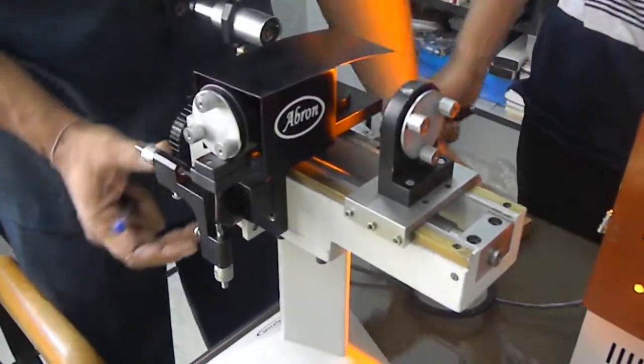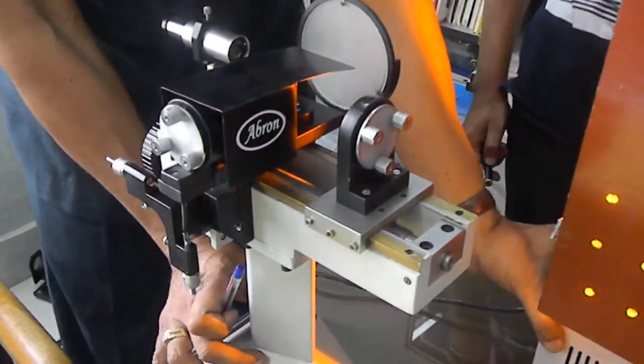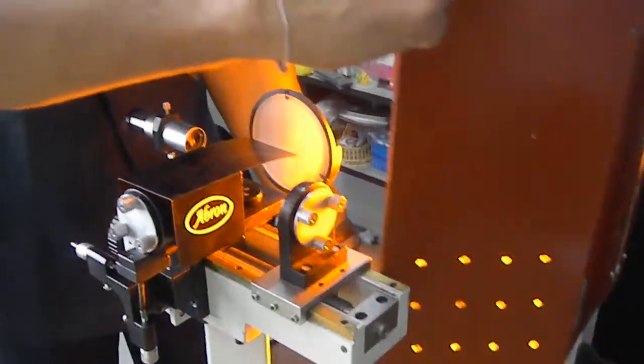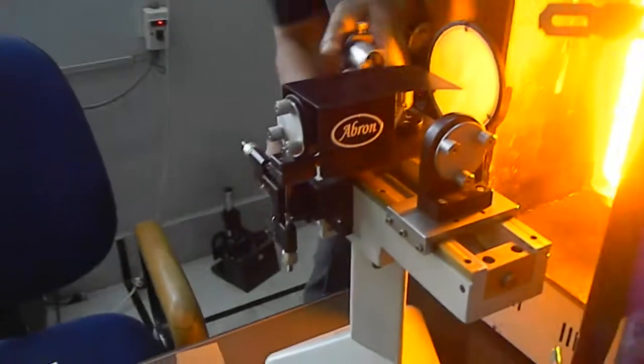Next step is to put the diffuser here. Sodium vapor lamp. Light should fall from this section. It is falling here. And then you can see the fringes from this section.